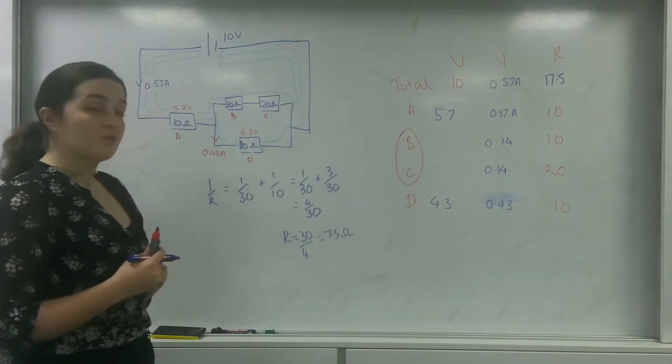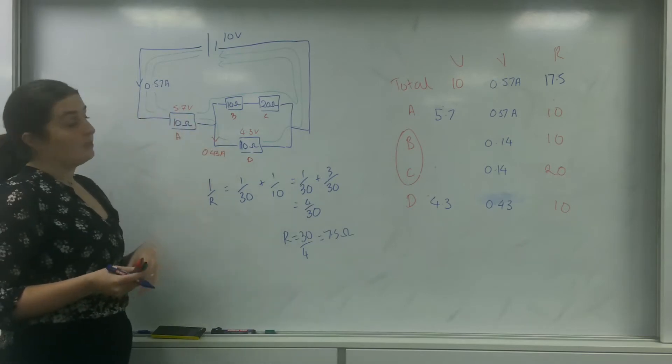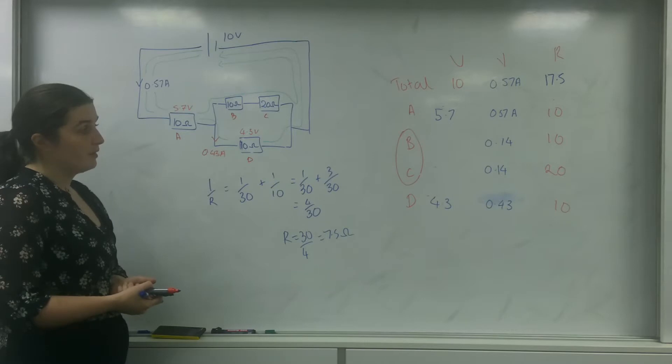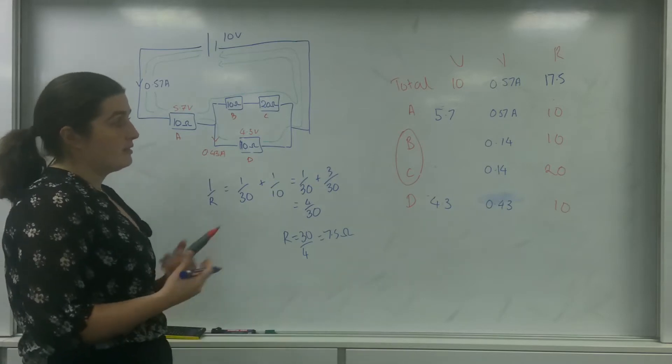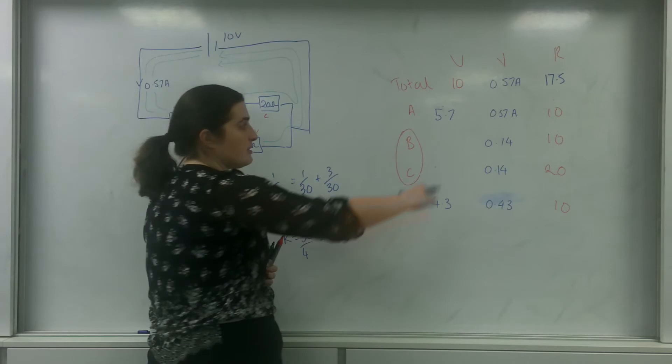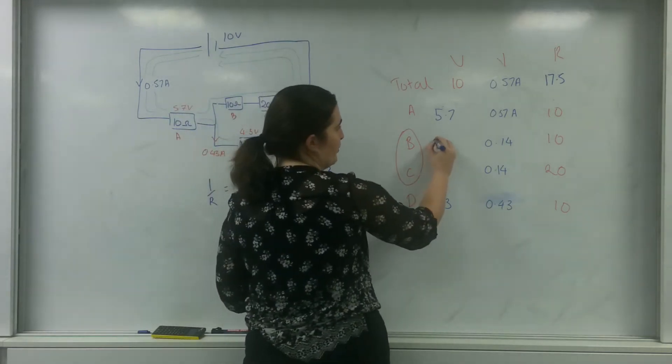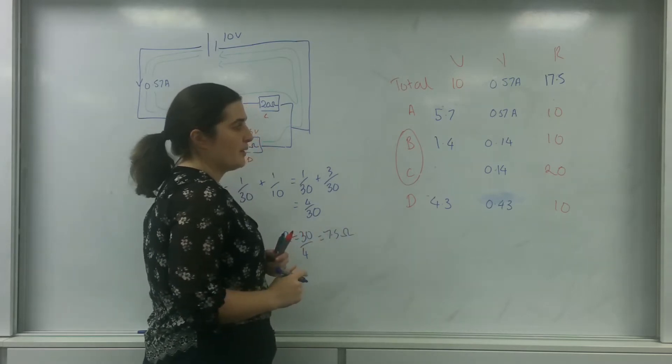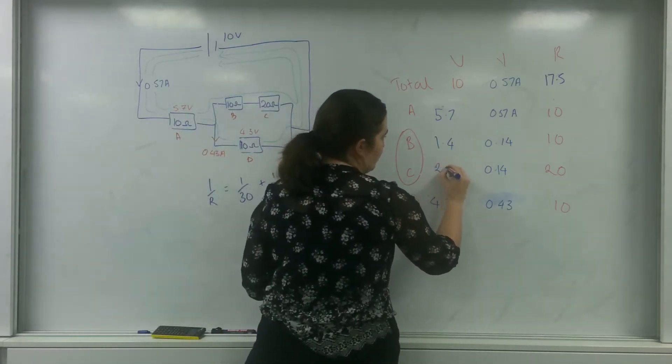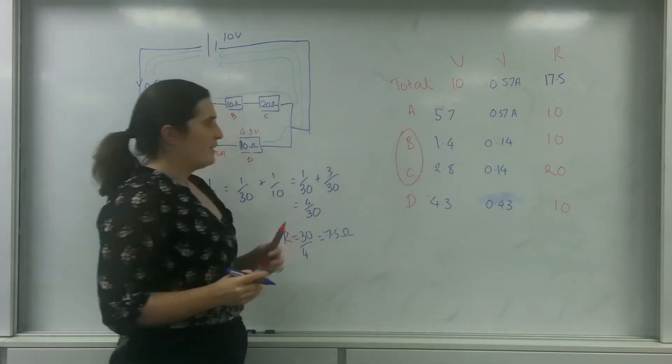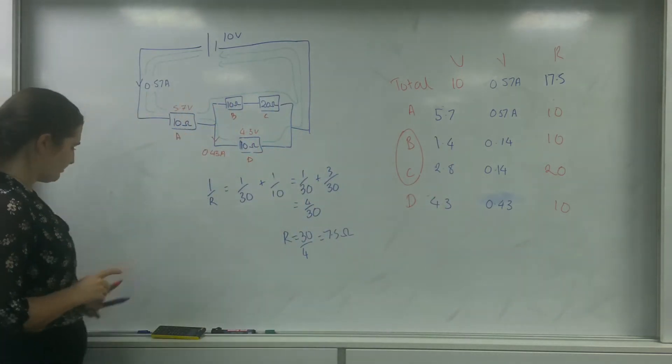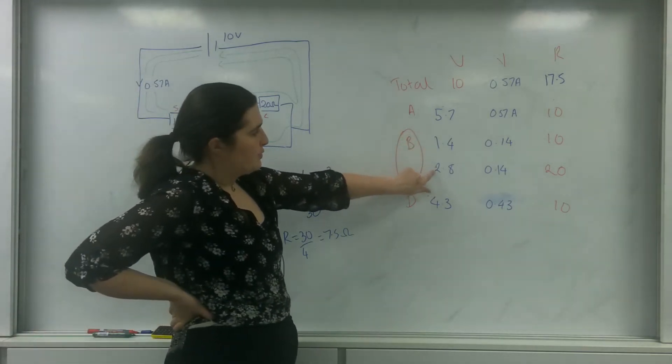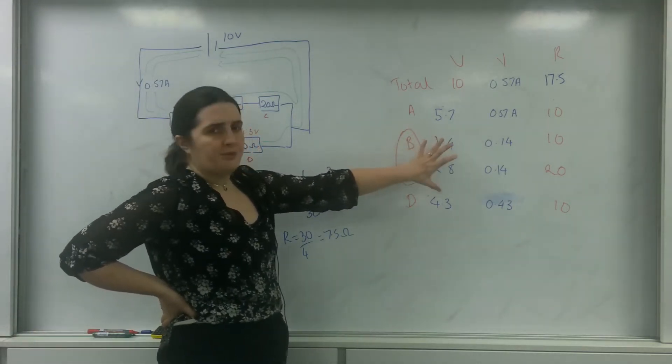And because I know that they're in series with each other, they have the same current going through them. So 10 times 0.14 is 1.4, and 20 times 0.14 is 2.8. And my answer here, in total I have 1.4 times 2 plus 2.8, and that's 4.2.